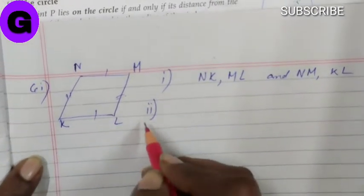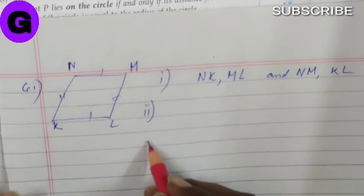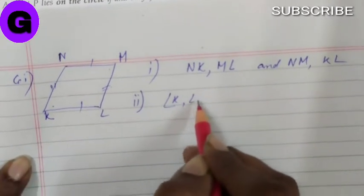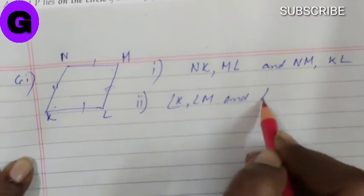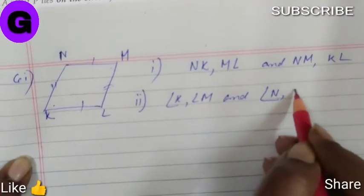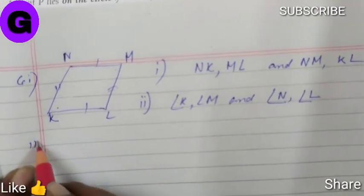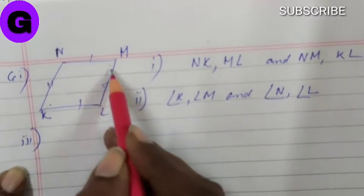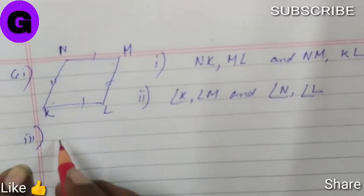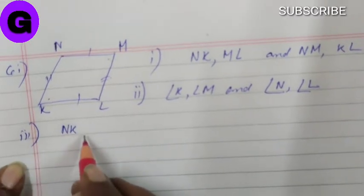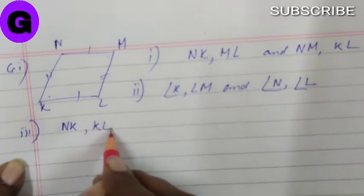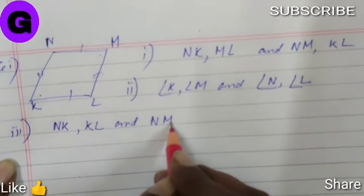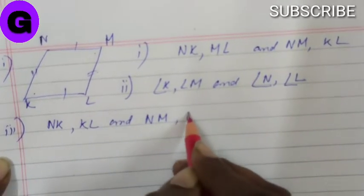Sub part 2, two pairs of opposite angles: angle K, angle M and angle N, angle L. Sub part 3, two pairs of adjacent sides. Adjacent side means nearby. So N, K, K, L and N, M, M, L.